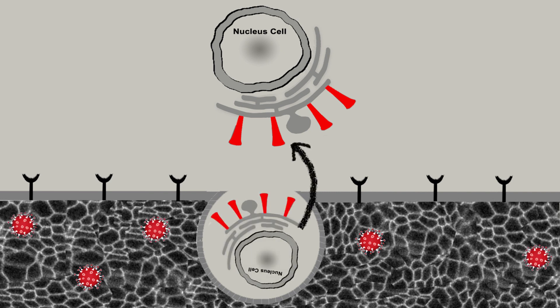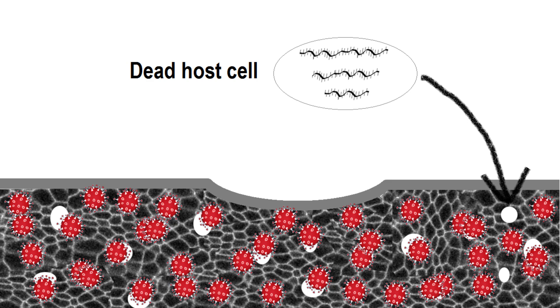This continuous feedback loop has no stop button. As a result, this process is repeated over and over again until the host cell collapses and dies. Each infected cell can release millions of viruses before the cell finally breaks down. That means a single coronavirus can create a million virus copies.